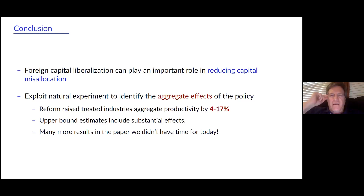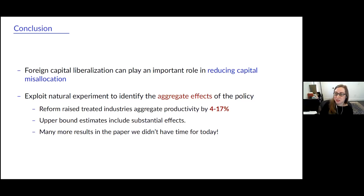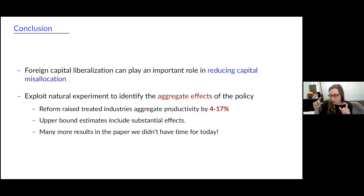Linking to the aggregate numbers again: if we think of a number like 100%, a factor-two difference from Hsieh and Klenow in India, can we interpret those numbers as explaining 4 to 17% of the Hsieh-Klenow measured misallocation? Not quite, because this is just for the treated industries — the Solow residual for those specific treated industries. The treated industries only make up about 10% of manufacturing, so they might have had different initial misallocation levels.